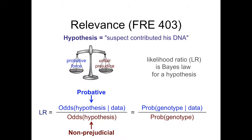Through several turns of Bayes' theorem and some algebra, we can calculate the likelihood ratio or match statistic by looking at the posterior probability of a genotype after we've seen data, divided by the random genotype probability before we've seen data. That's where genotypes come in — they're a way of using the data to calculate likelihood ratios about a hypothesis.